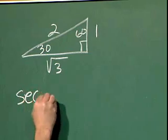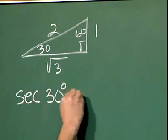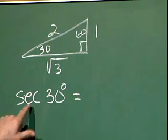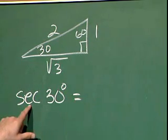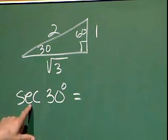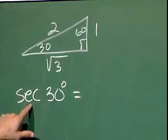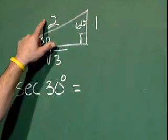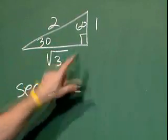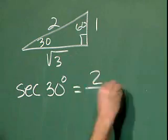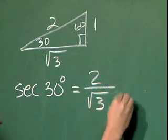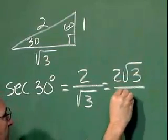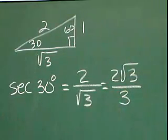We want the secant of 30 degrees. The secant of 30 degrees is either think of it as the reciprocal of cosine, or if you've memorized the secant, it's going to be the hypotenuse over the adjacent. So the hypotenuse over the adjacent. Rationalize that denominator, and you get 2 square roots of 3 over 3.